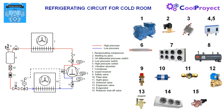In number 8 we have the liquid receiver. Its function is to store liquid as a hydraulic inertia tank to ensure the expansion valve is always fed with liquid refrigerant and to prevent flash gas. This receiver is equipped with a safety valve, number 9, to release pressure from the receiver in case of emergency. We can see in number 15 a rotalock shutoff valve to isolate components like the compressor or receiver and to carry out maintenance operations.